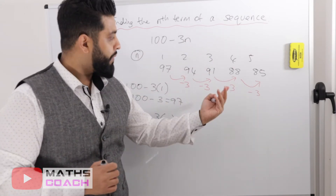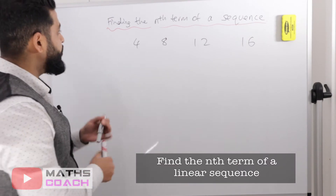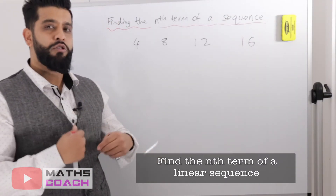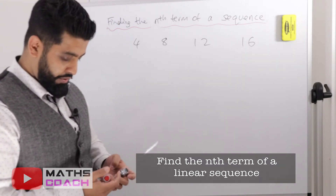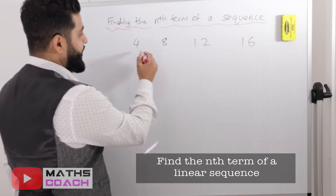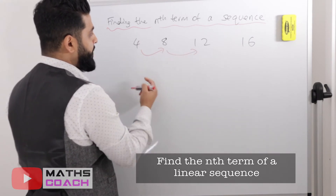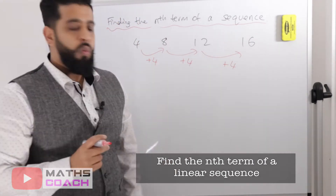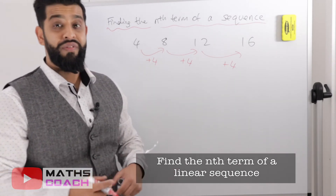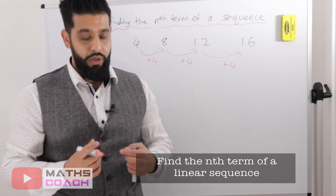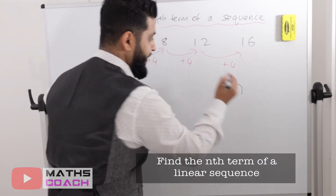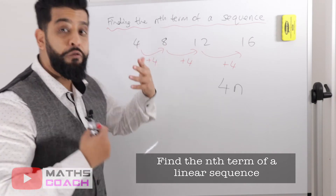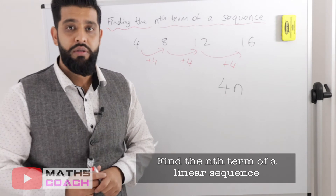A question may ask you to find the nth term of a sequence. I'll make a later video for quadratic sequences; in this lesson we focus on linear sequences. The first thing you want to do is find the common difference between each term. For the sequence 4, 8, 12, 16: from 4 to 8 we add 4, 8 to 12 add 4, 12 to 16 add 4. A constant difference means it's a linear sequence. Because the difference is 4, we write 4n.